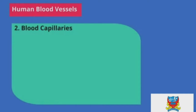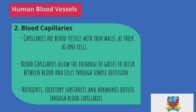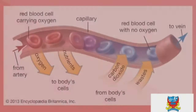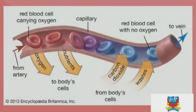Blood capillaries are blood vessels with thin walls — as thick as one cell. Blood capillaries allow the exchange of gases between blood and cells through simple diffusion. Nutrients, excretory substances, and hormones also diffuse through the blood capillaries.